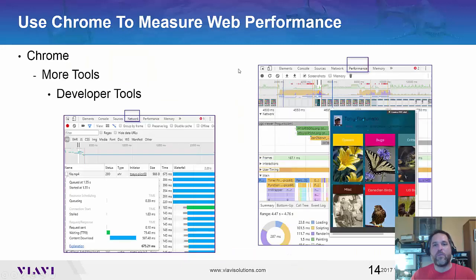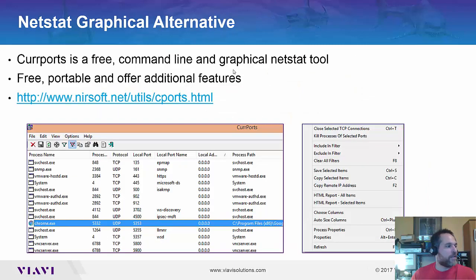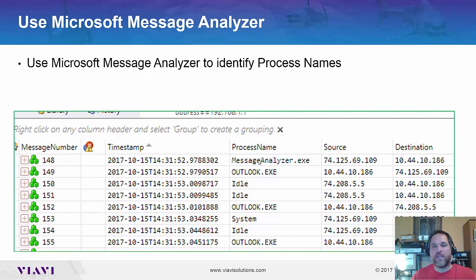I covered how to use Chrome to measure web performance using the network menu or the performance menu — really cool stuff. There's also a neat little tool from Nirsoft called CurrPorts. And Microsoft Message Analyzer can actually tell you the process that generated the packet, which is always a great thing to have in your toolbox.